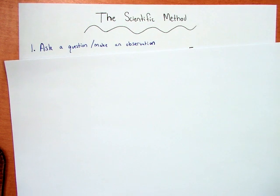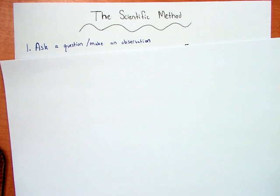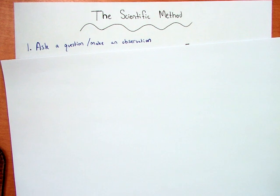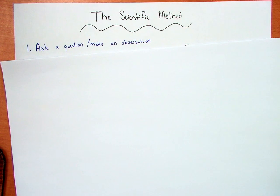So the first thing we do when we're problem solving is we need a question. We need to know what are we trying to find out. This can be done by either asking a question or maybe making an observation.